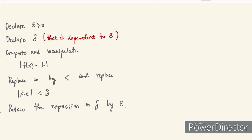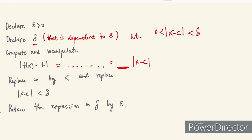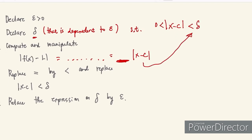Number three: we compute and manipulate the expression. Our goal is to work through a series of steps such that we end up with an expression in terms of x minus c. In step four, we replace x minus c with delta, changing the inequality accordingly. Once we get an expression in terms of delta — say with some coefficient times delta — in step five we replace that expression for delta in terms of epsilon.